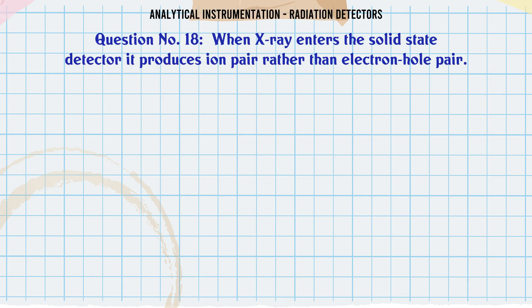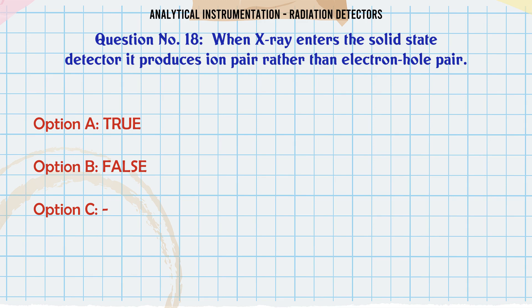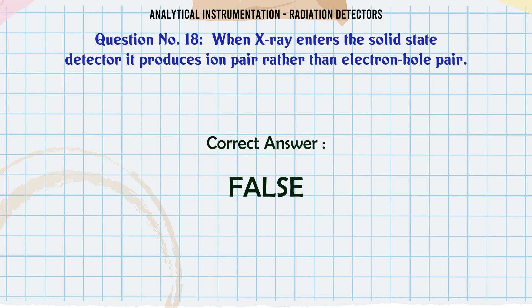When X-ray enters the solid state detector it produces ion pairs rather than electron-hole pairs. A. True. B. False. The correct answer is False.